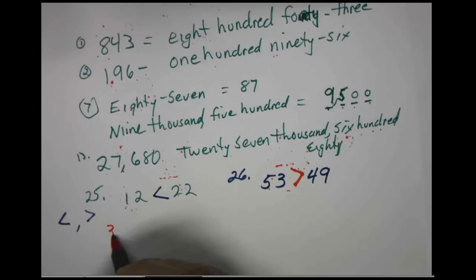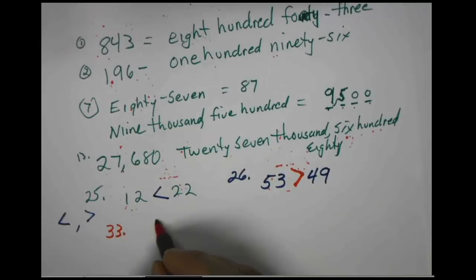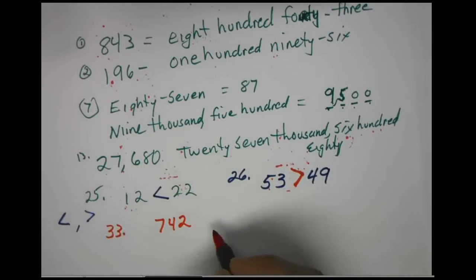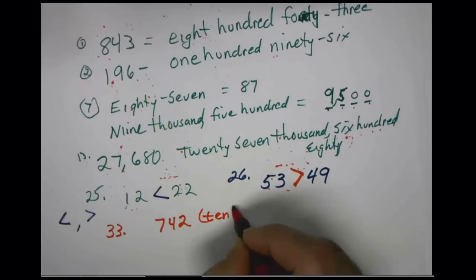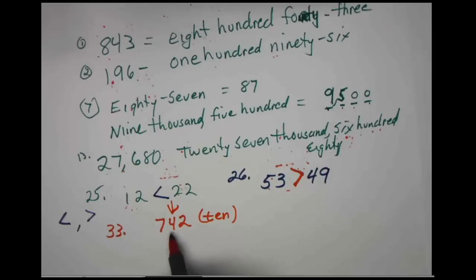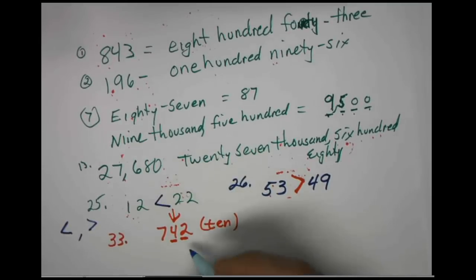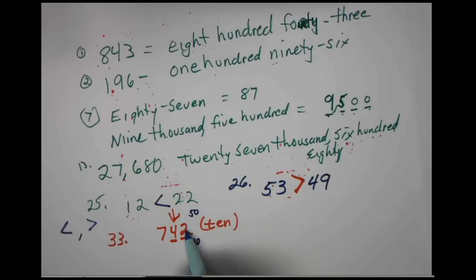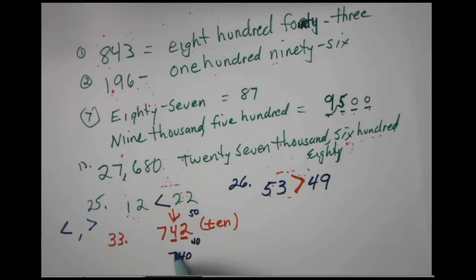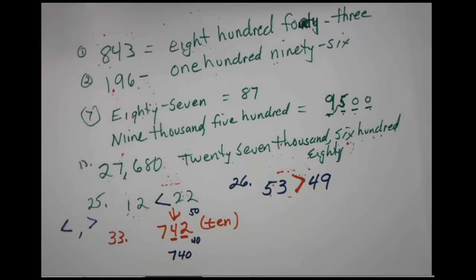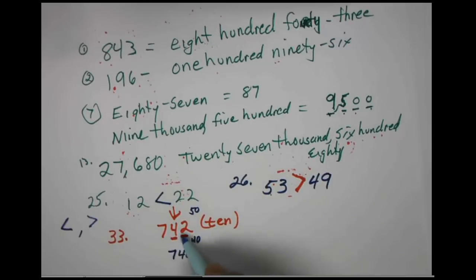Down at the bottom, problem number 33 gives us 742 and asks us to round to the nearest ten spot. We're looking at place value — the digit 4 is in the ten spot, so we compare that number and the one to the right: we're comparing 42. Is that closer to 40 or 50? The 2 rounds down, so 42 is closer to 40. Everything in front stays the same, so 742 rounded to the nearest ten is 740.